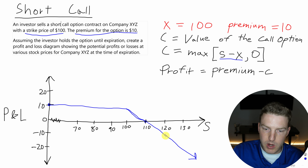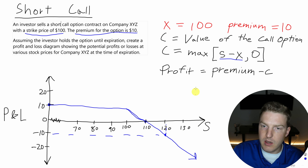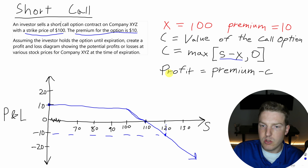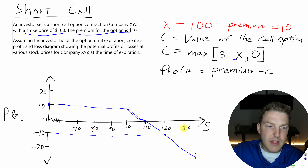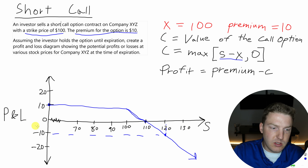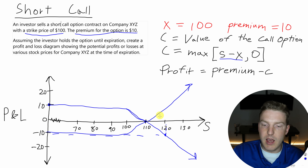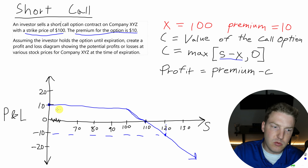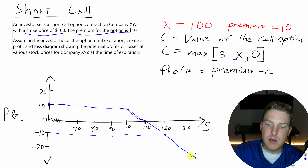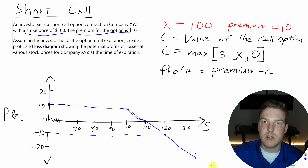Once we get to $120, the short call seller has lost $10 — the value of the call is $20, so profit is 10 minus 20, a loss of $10. On the long side of the call there was unlimited upside, but when we sell the call, the best we can do is gain $10. We have an infinite ability to lose money because the stock price could keep going up and our losses could just continuously get larger.